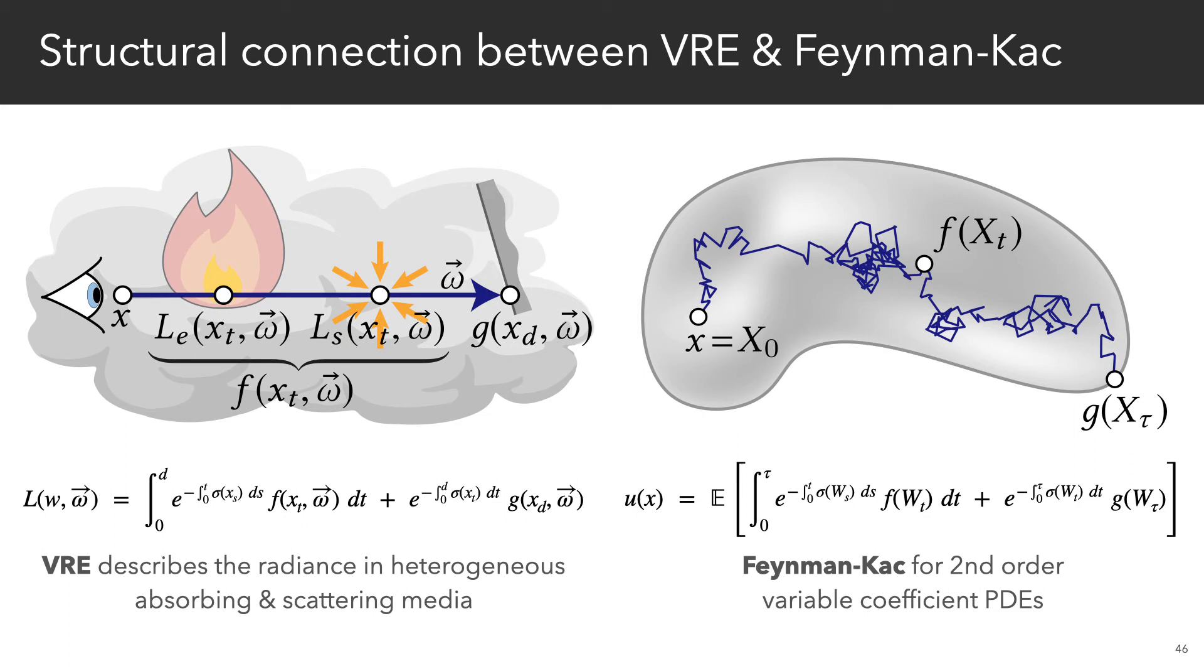But if for just a second we put aside the physical meaning of all of these symbols, then structurally, the main difference between Feynman-Katz and the VRE is that one requires simulation of Brownian random walks, while the other provides the radiance along a ray.